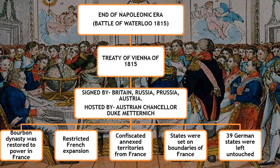Napoleon lost the Battle of Waterloo in 1815. The countries which defeated France were Britain, Prussia, Austria, and Russia. These countries had to decide what to do with France, its overseas colonies, and the many countries captured by Napoleon, as well as the changes Napoleon had introduced. They met in Austria, hosted by Austrian Chancellor Duke Metternich, and the treaty they signed was called the Treaty of Vienna of 1815.